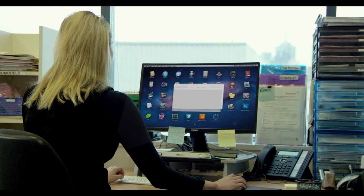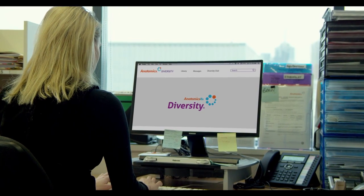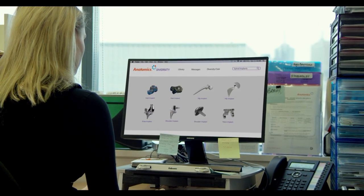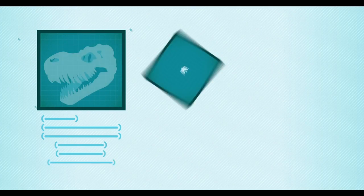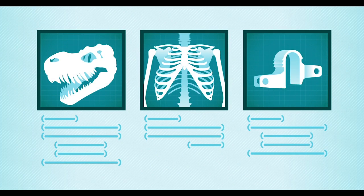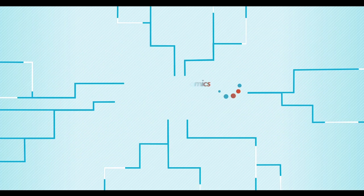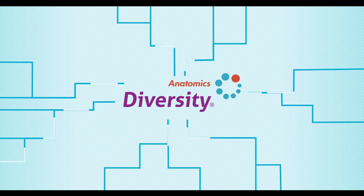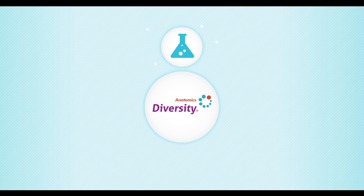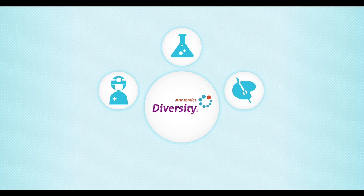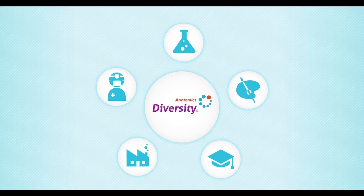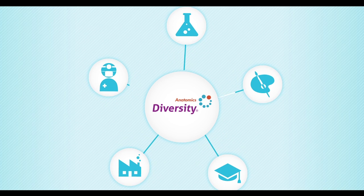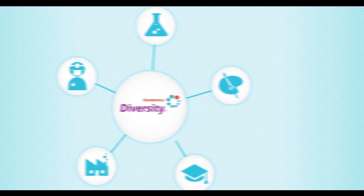Anatomics Diversity is an online archive of 3D printing build codes that enables users to create 3D models of just about anything. From extinct creatures to the most intricate surgical implants, the Anatomics Diversity Portal gives users access to a worldwide network of scientists, surgeons, artists, educators, and manufacturers who are uploading new 3D build codes every day. The data is collected and stored, ready for users to browse with ease from any web-enabled device.